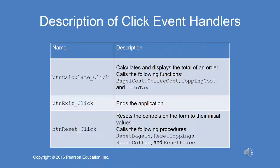Each one of those functions will return the cost of the bagel, the cost of the coffee, the topping cost, and the calculated tax. The exit button ends the application — that's very simple. The reset button resets the controls on the form to their initial values and calls the following procedures: reset bagels, reset toppings, reset coffee, and reset price.